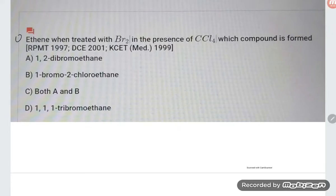Hi students, let us try to understand one problem based on the ethene chapter. They are saying ethene when treated with Br₂ in the presence of CCl₄, which is a non-polar solvent, which compound is formed?